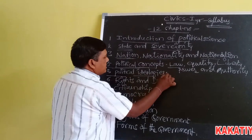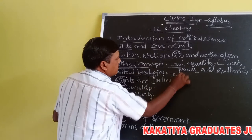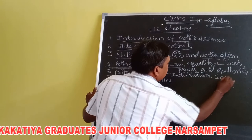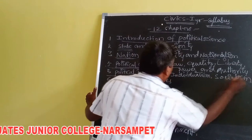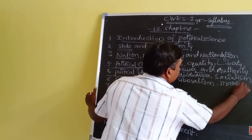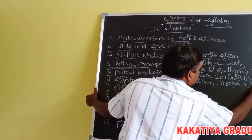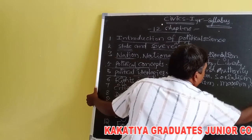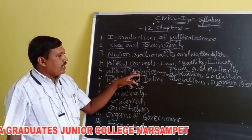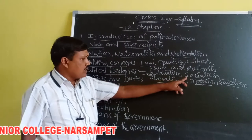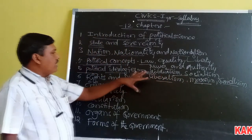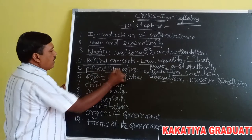The fifth chapter is Political Ideologies. Political ideologies include individualism, socialism, liberalism, Marxism, and Gandhism. We will study what each of these theories means — what individualism means, what socialism means, what liberalism means, and what Gandhism means — under the fifth chapter on political ideologies.